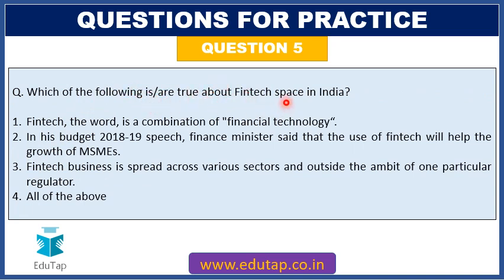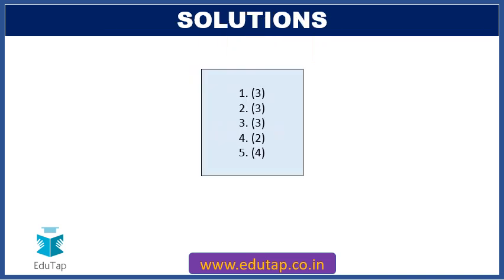Question 5: Which of the following is true about the fintech space in India? (A) Fintech is a combination of 'financial' and 'technology.' (B) In the Budget 2018-19 speech, the Finance Minister said that the use of fintech will help the growth of MSMEs. (C) Fintech businesses are spread across various sectors and outside the ambit of one particular regulator. (D) All of the above. All three statements are true, so the answer is option 4 — all of the above.